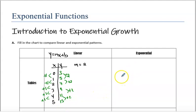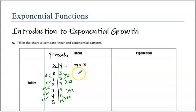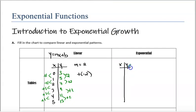Now we come to exponential. So with linear, we're adding something all the time. This would have also worked if I was subtracting 2 every time — that's the same thing as adding negative 2, which is why we call linear arithmetic. And then we come to exponential. I'm going to make myself a little table here to look at the differences between linear and exponential.